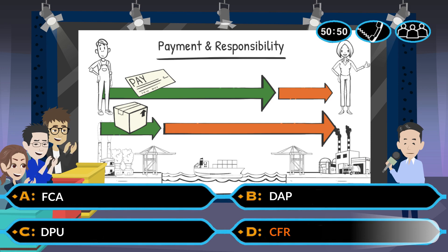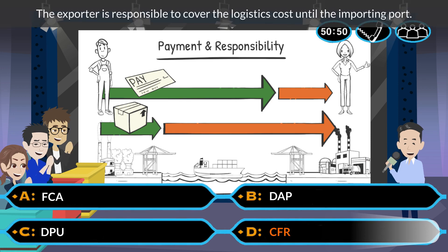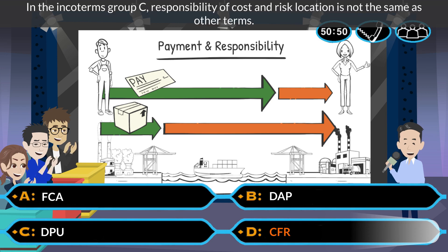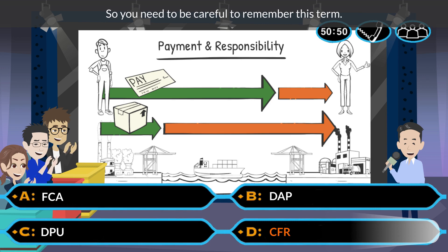The answer is D. CFR. The exporter is responsible to cover the logistics cost until the importing port. However, the exporter is responsible for the cargo risk only until the exporting port. In the Incoterms Group C, the responsibility of cost and risk location is not the same as other terms. So you need to be careful to remember this term.